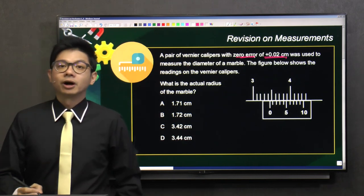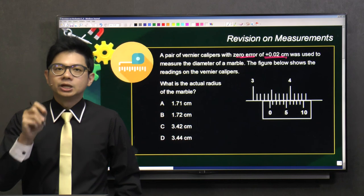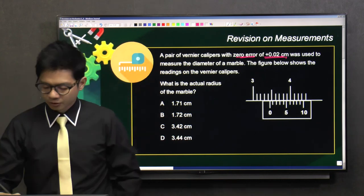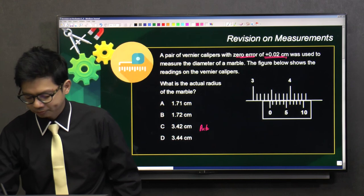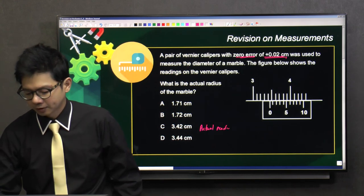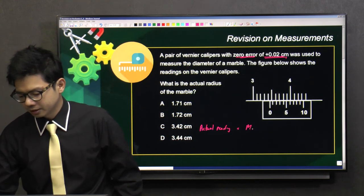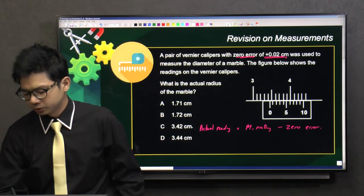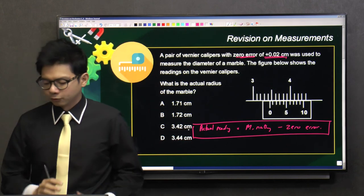First of all, there is this zero error. So how do we deal with zero error? Remember the governing formula that I give you. When you want to find the actual reading, you take the measured reading minus the zero error. So this is foolproof.